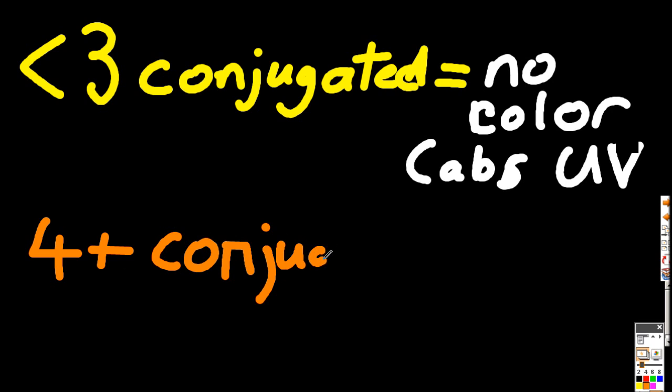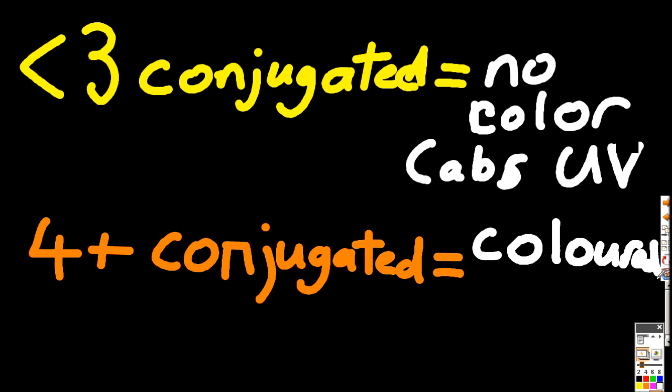But if it has four or more conjugated double bonds, then it's going to absorb some color. For example, it might absorb orange. And therefore, it would look blue, the complementary color.